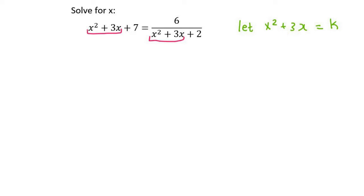So moving on. So we know that that is now going to be replaced with k. So that's going to be k plus 7 equals to 6 over k plus 2. See what I've done there? I've just replaced the x squared plus 3x with k. Now, I can solve this like a normal equation where there's a fraction. So the lowest common denominator here would be k plus 2.